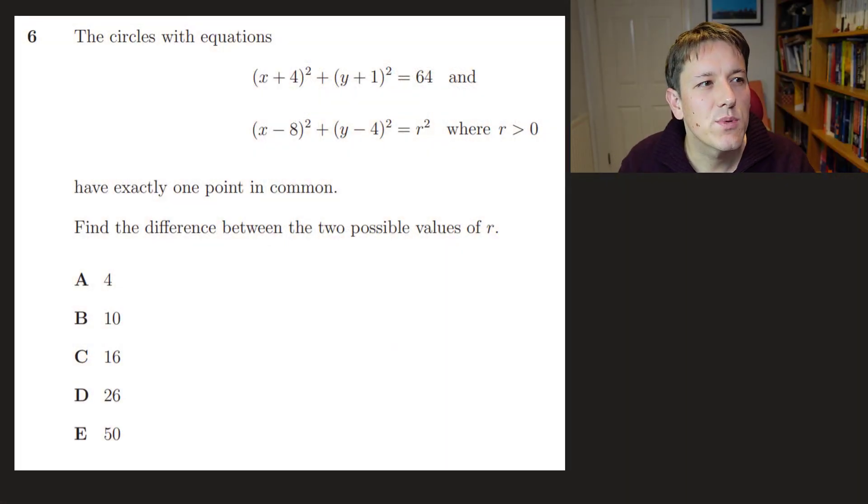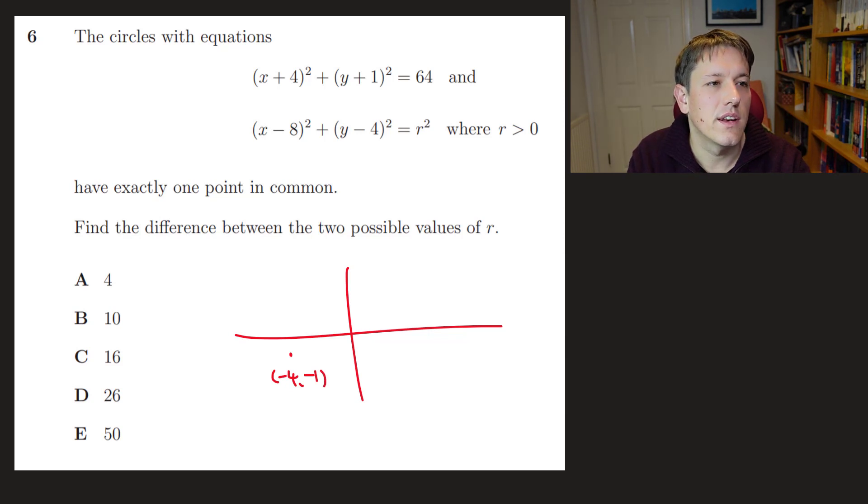So in question 6, we've got these two circles with their equations given and it says they've got exactly one point in common. Find the difference between the two possible values of R. So really, a quick sketch is very informative here. So the centre of this first circle is at minus 4, minus 1 and it's got radius 8. So I'll just sort of roughly sketch this. And the other one has centre 8, 4 and it's got radius R.